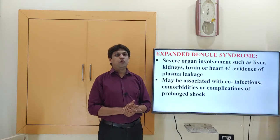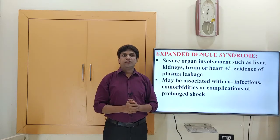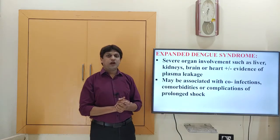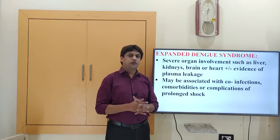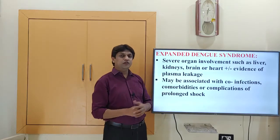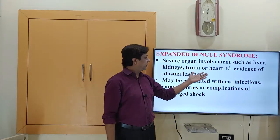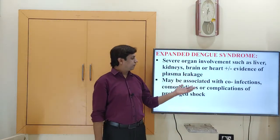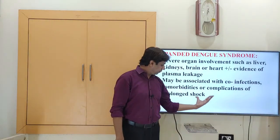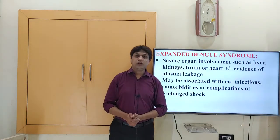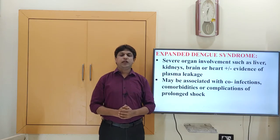In the next video, we will discuss laboratory diagnosis and treatment. Finally, one word about expanded Dengue syndrome: after Dengue shock syndrome, it can lead to severe organ involvement including liver, kidneys, brain, or heart, with evidence of plasma leakage. It may be associated with co-infections, co-morbidities, or complications of prolonged shock. In the next video, we will cover laboratory diagnosis and treatment of Dengue fever.